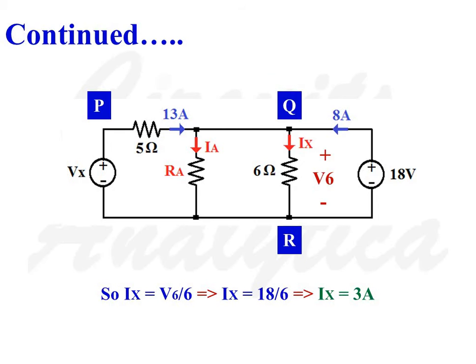Therefore, IX is equal to V6 divided by 6, that is equal to 18 by 6. Therefore we will get IX is equal to 3 ampere.